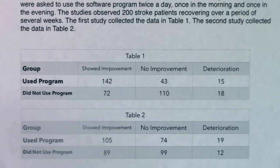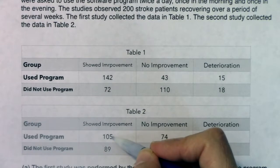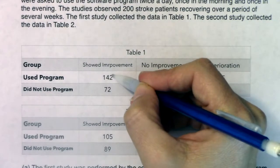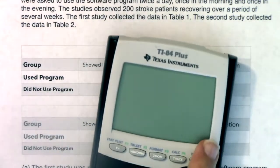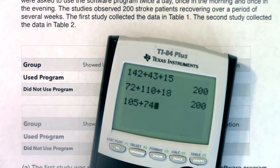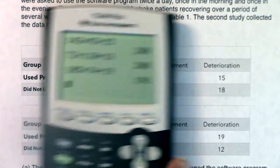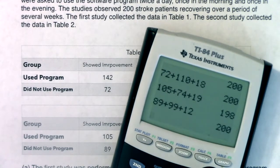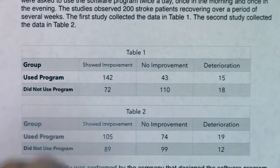Now let's look at the second experiment. In Table 2, there are still more folks showing improvement who used the program compared to those who didn't, but the discrepancy isn't as large — 142 to 72 is a much larger ratio than 105 to 89. Adding up the second experiment: 105 plus 74 plus 19 is 198, so two of the folks didn't make it out the other side. It happens — welcome to stats. The real world is very messy; things go wrong all the time. We could call that a non-response bias, though two people likely isn't large enough to affect the overall interpretation.